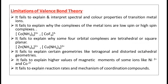What are the limitations of valence bond theory? The first limitation is that it fails to explain and interpret the spectral and color properties of transition metal ions. This is a serious drawback of the valence bond theory. No doubt VBT very well explained the nature of the bond, the geometry, and the magnetic properties of coordination compounds — but it could not interpret the spectral and color properties of transition metal complexes.